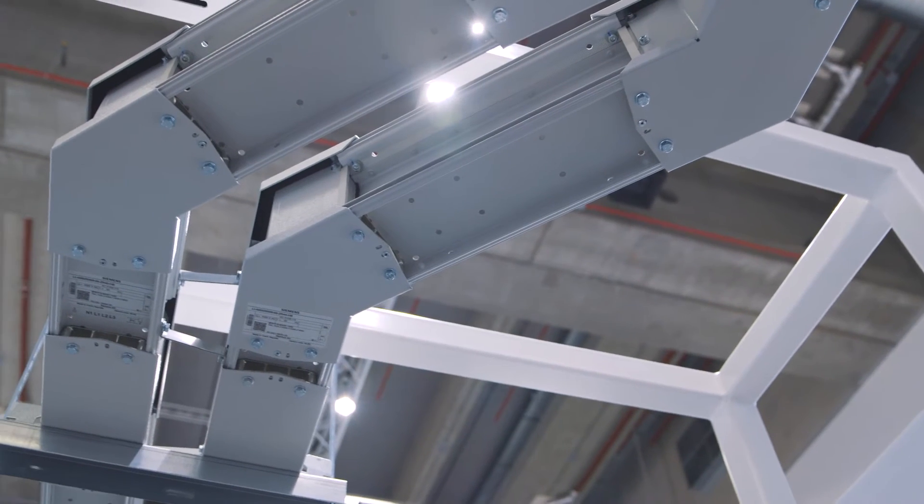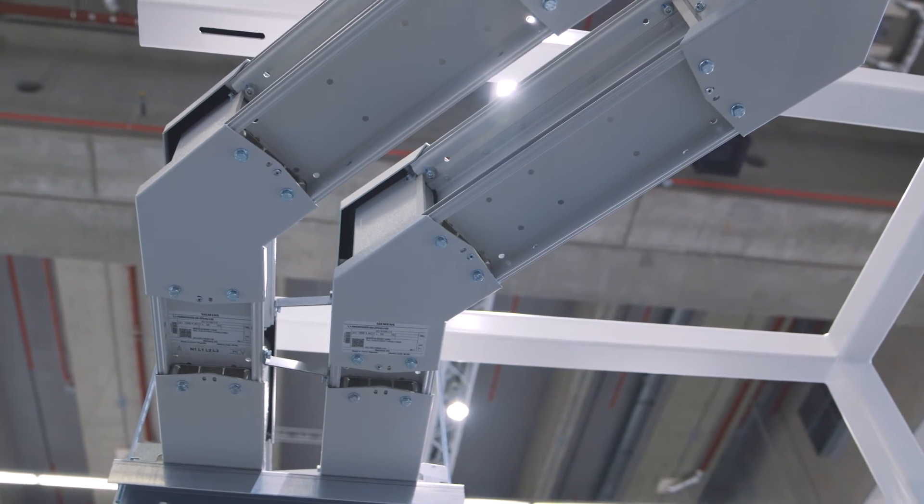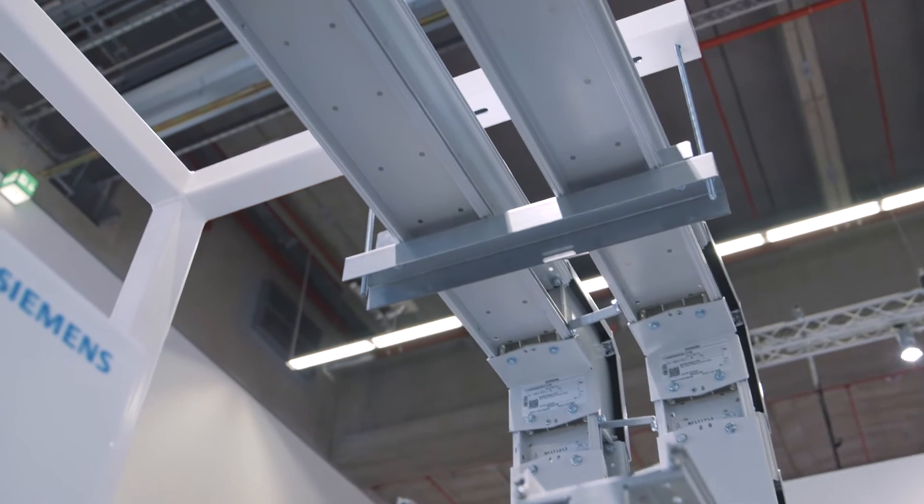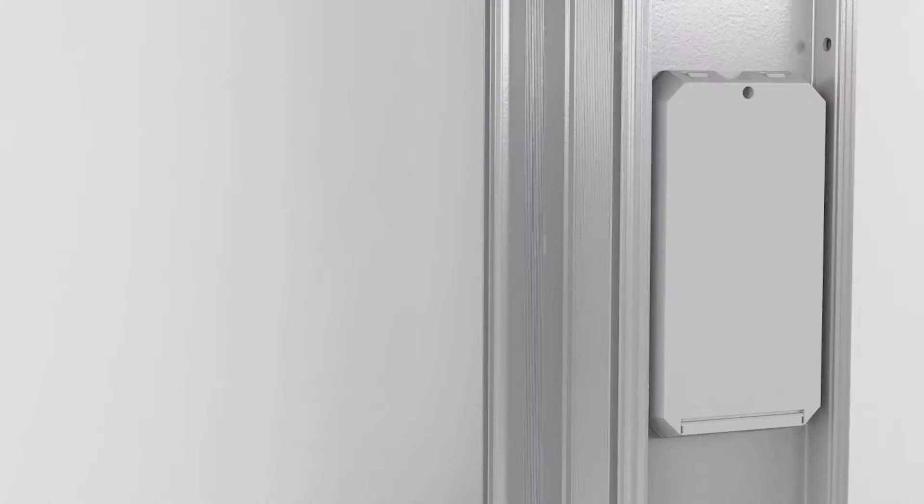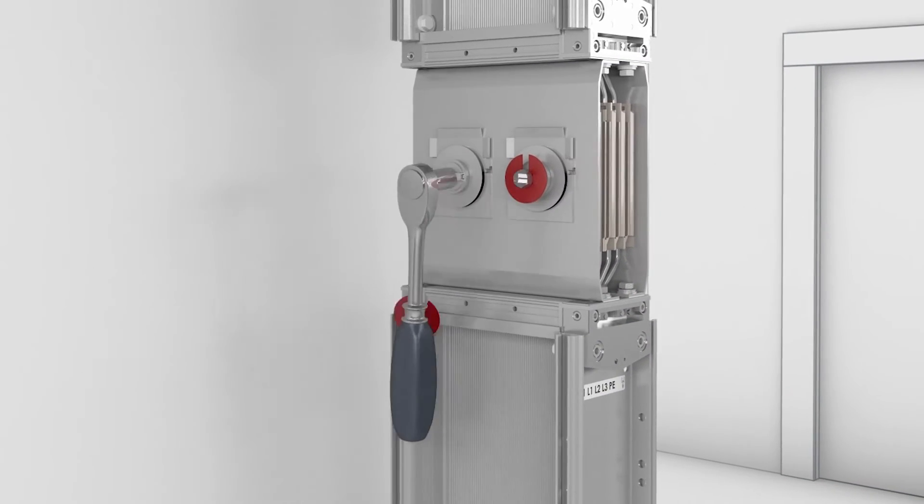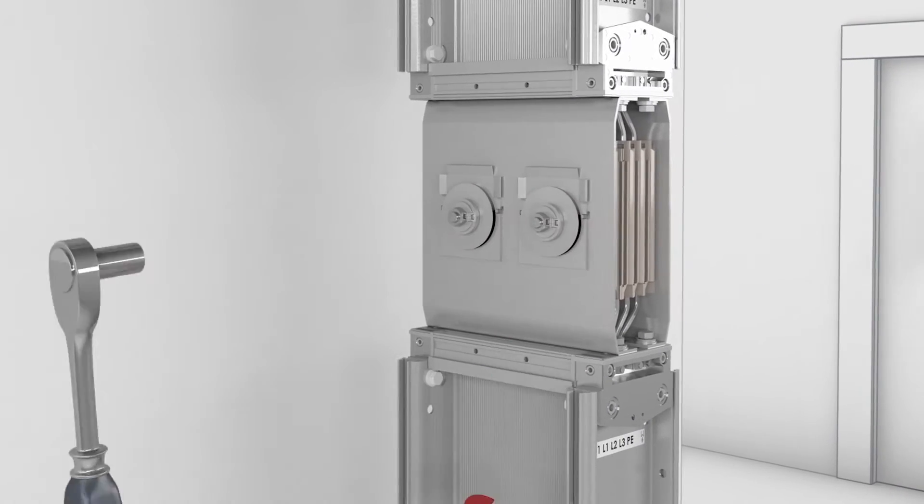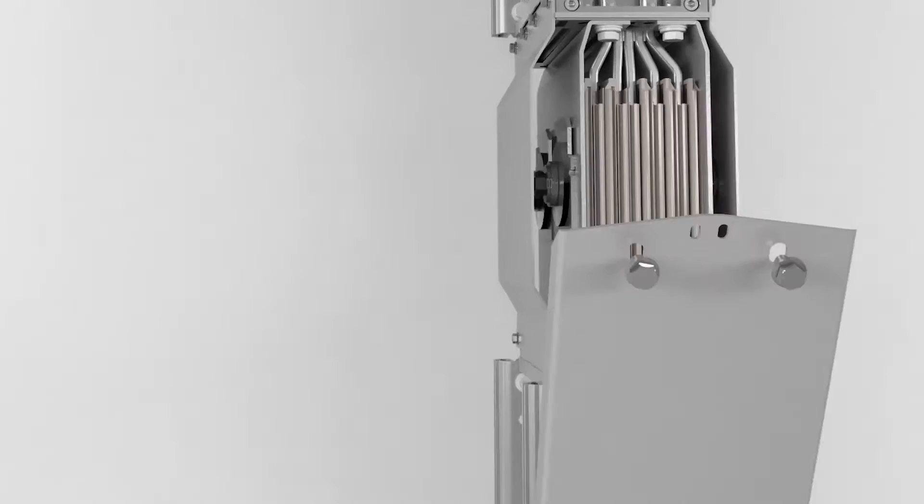In a bus bar trunking system, the electrical conductor is located in a closed metal housing. Each element is design verified, is individually tested in the factory, and is assembled in modular construction on the building site.